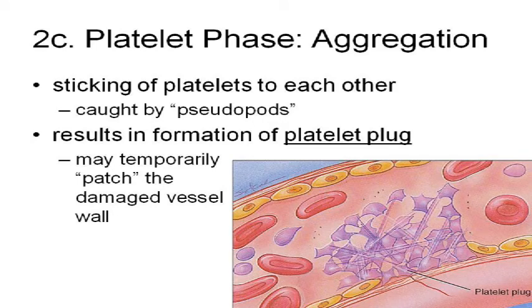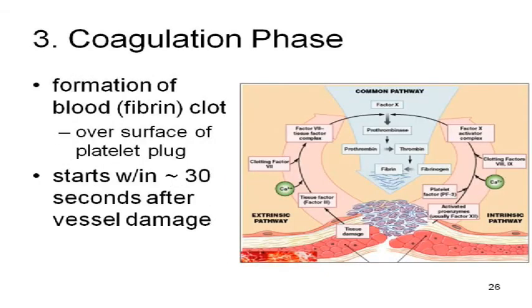The platelets aggregate and basically form a little temporary platelet plug. Now, if all you form is the platelet plug, it can be easily dislodged and the vessel can start to hemorrhage again. But the platelet plug forms the perfect environment for the fibrin clot to form on top of it — it's fast, it slows down the bleeding, and it makes a perfect place for the fiber clot to form. The last part is the coagulation phase.